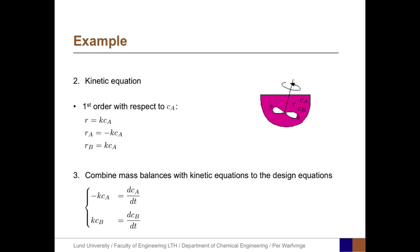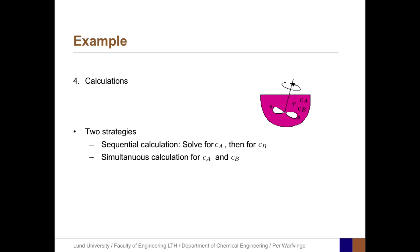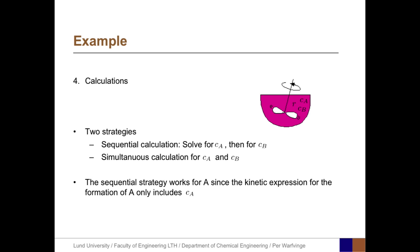The third step is to combine the mass balance equation with the kinetic equation to form the two design equations. The first is negative K·C_A equals dC_A/dt, while the design equation for B is K·C_A equals dC_B/dt. We have two strategies: either a sequential approach where we first solve for C_A and then for C_B, or solve simultaneously for C_A and C_B at the same time. Here we will apply the sequential calculation.